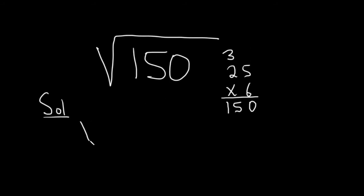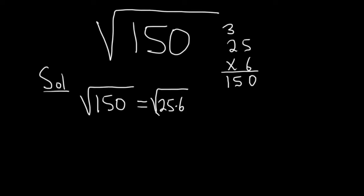So we can take this square root of 150, and this is equal to—we can separate it like this—25 times 6. And then we can break this up into two square roots: the square root of 25 times the square root of 6.